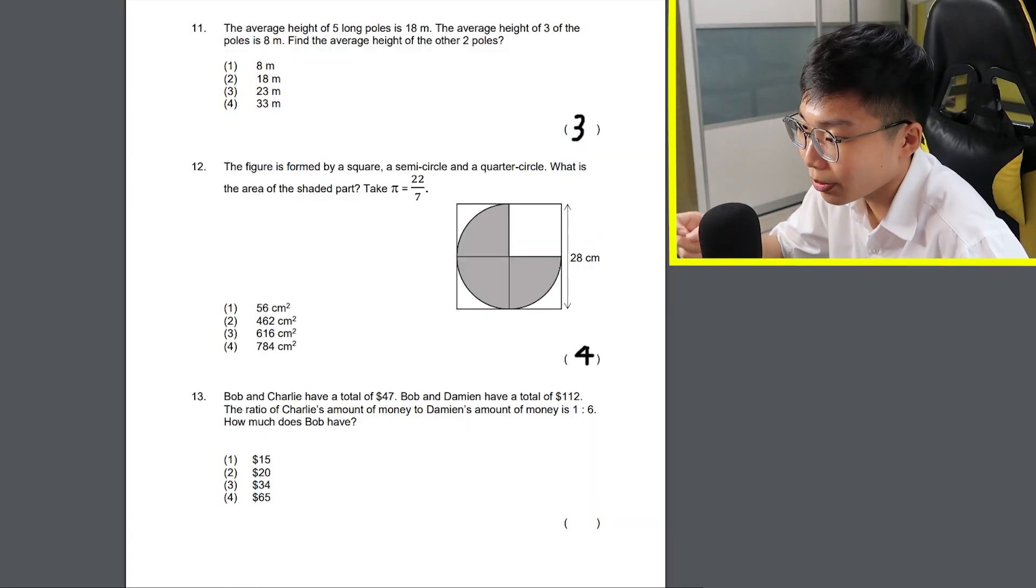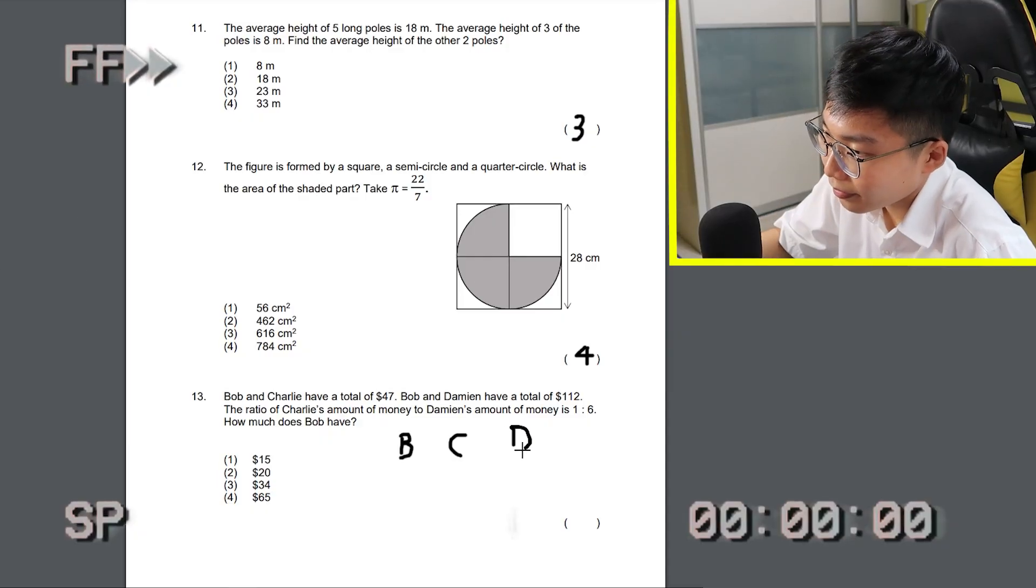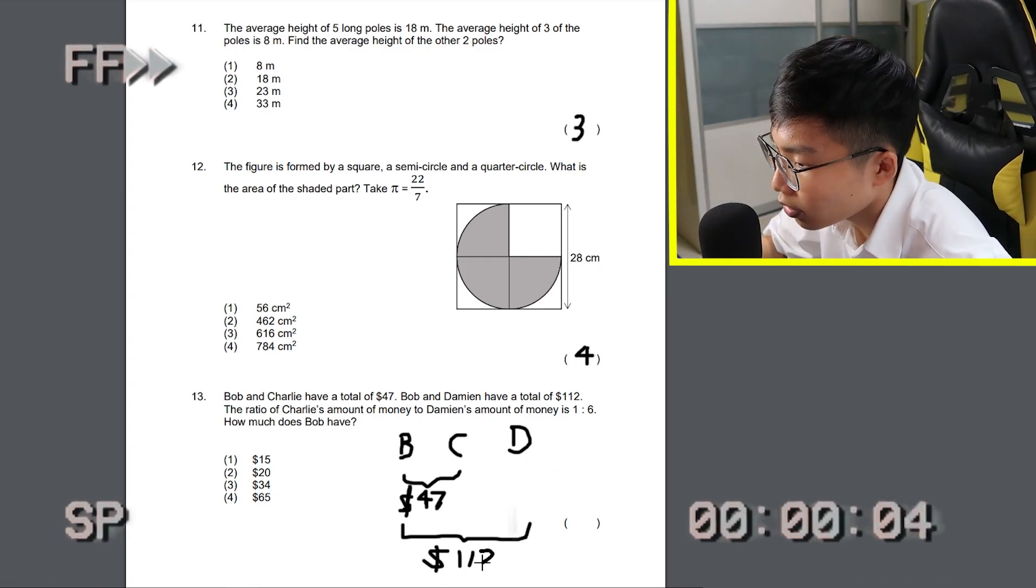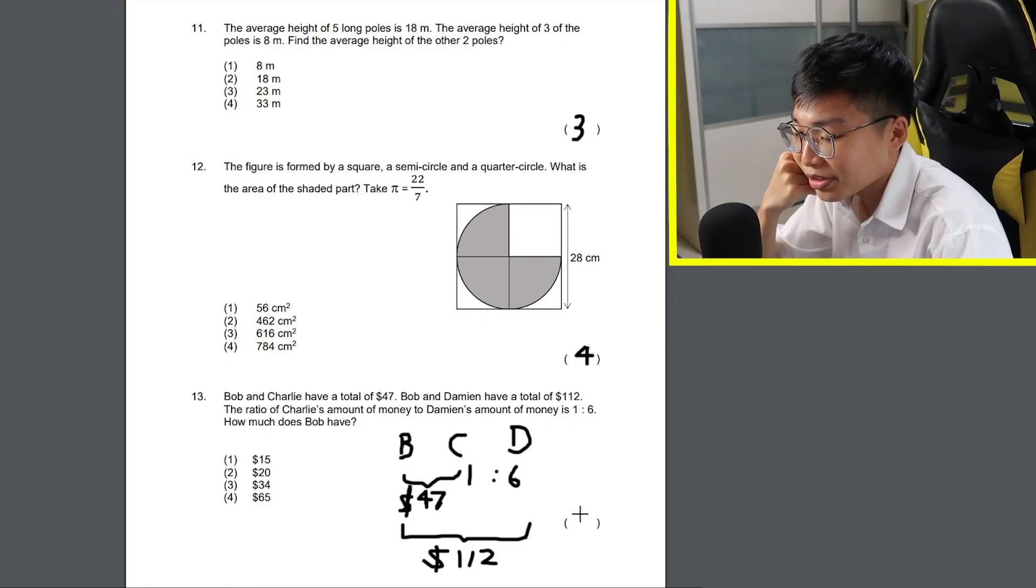Okay, come on please. Give me a question that I know. Bob and Charlie have a total of $47. Bob and Damien have a total of $112. The ratio of Charlie's amount of money to Damien's amount of money is 1 to 6. How much does Bob have? Ah. My brain can't handle this. Let's go with 2.